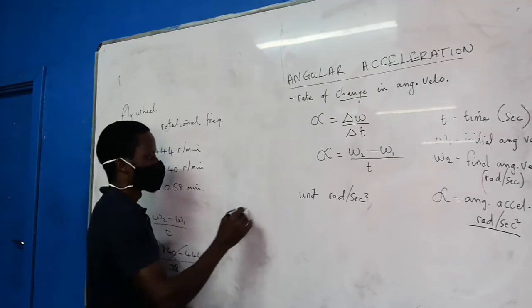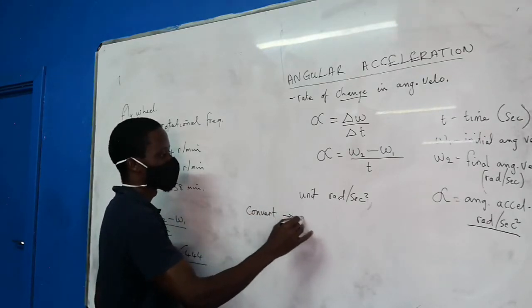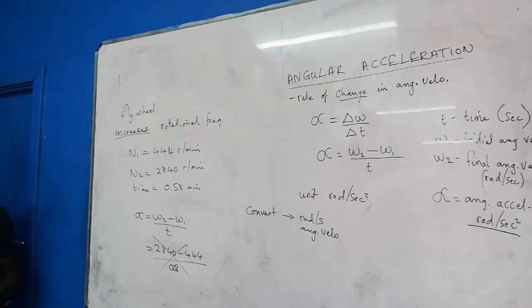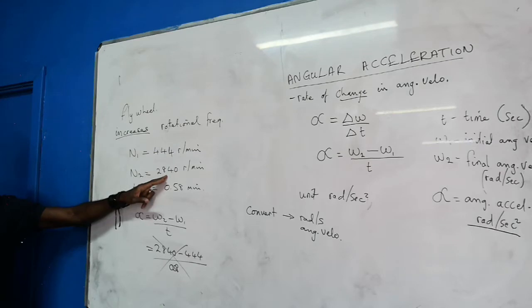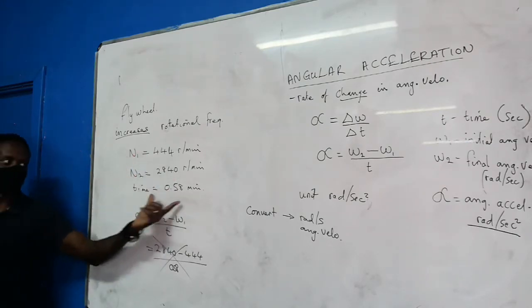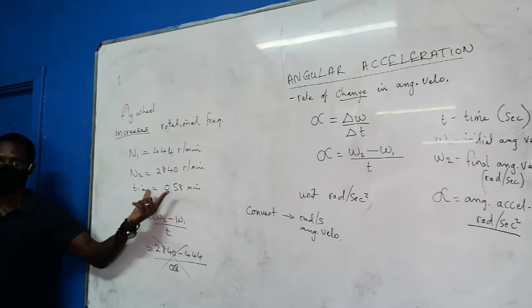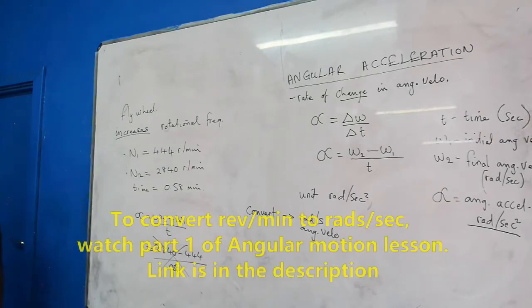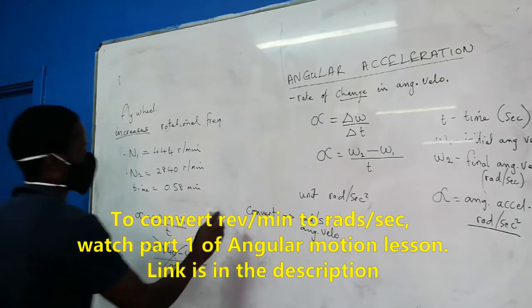Because this is a rotational frequency, revs per minute, you must convert to radians per second, to angular velocity. So what we did yesterday will be very important. Do not take that number. Convert this to radians per second. That's the number you use there. You convert this to radians per second, that's the number you use here. I need answers for this guy, for that guy. Then I'll talk about time.